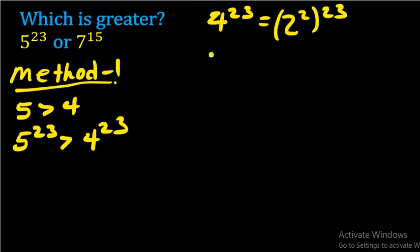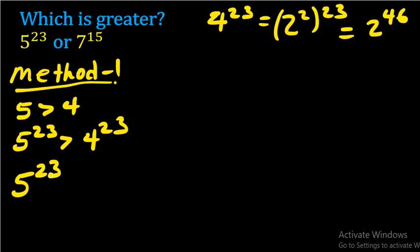We can express four as two to the power of two, and this is the same as two to the power of 46. Therefore five to the power of 23 is bigger than two to the power of 46.